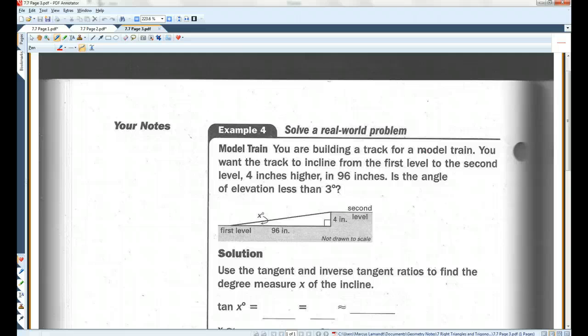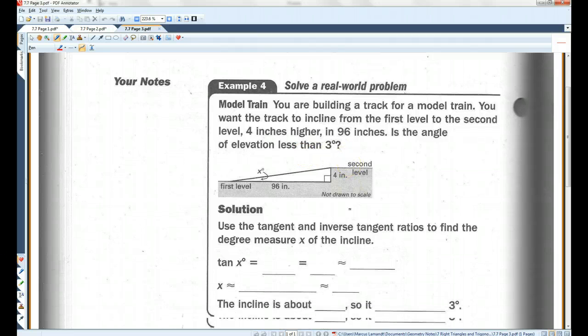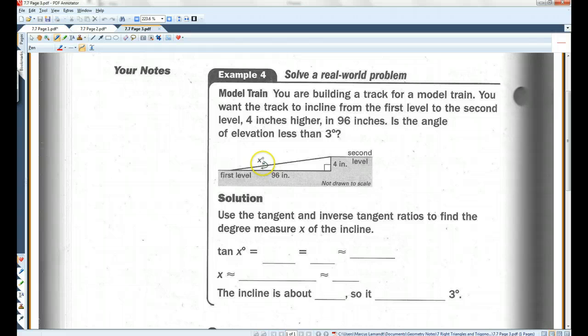Let's go on to the last page. You are building a track for a model train. You want the track to incline from the first level to the second level 4 inches higher in 96 inches. Is the angle of elevation less than 3 degrees? So, this is the situation. We are looking for this angle here. We have the opposite and we have the adjacent. So, if you think SOHCAHTOA, opposite and adjacent, that would be tangent.